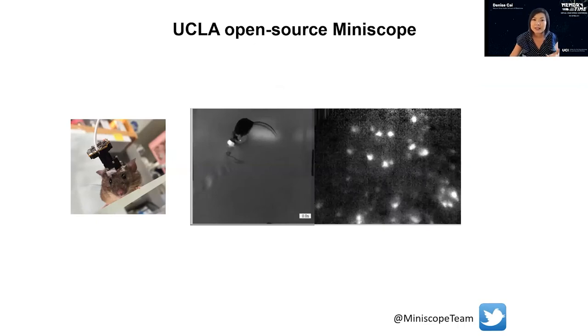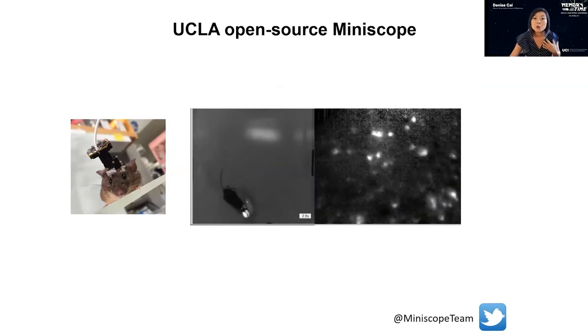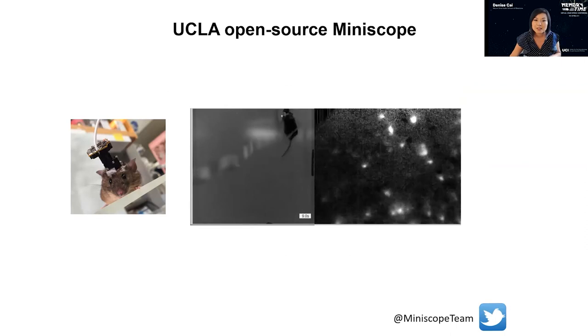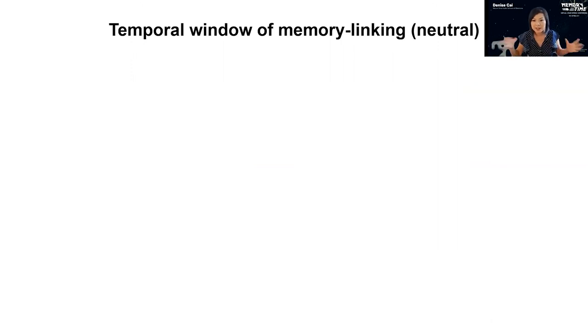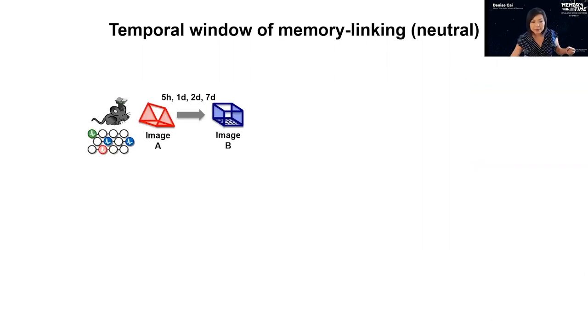In these studies we use our UCLA open-source miniscopes to look at neural ensembles as animals freely behave. Before asking how negative valence influences the temporal window, we first asked: what is the temporal window for initially neutral contexts? We did calcium imaging in dorsal hippocampus, imaging neural ensembles as animals explored two different contexts separated by five hours, one day, two days, and seven days.